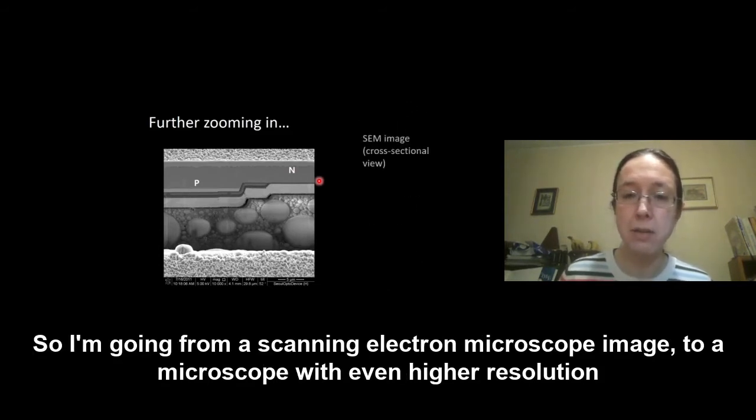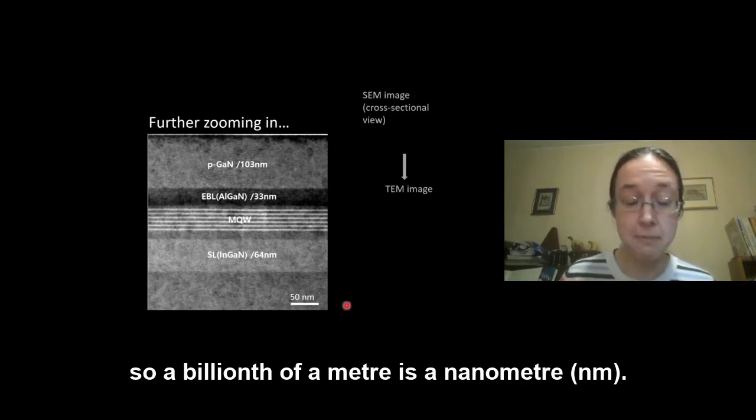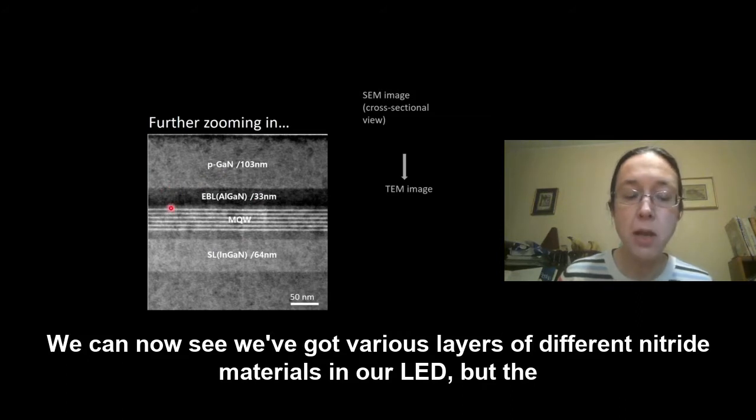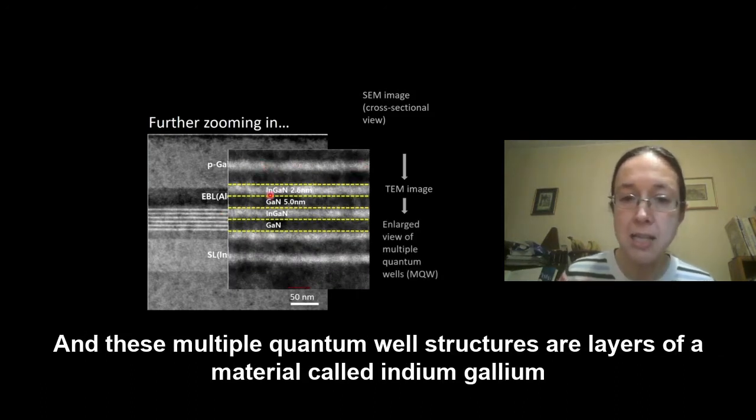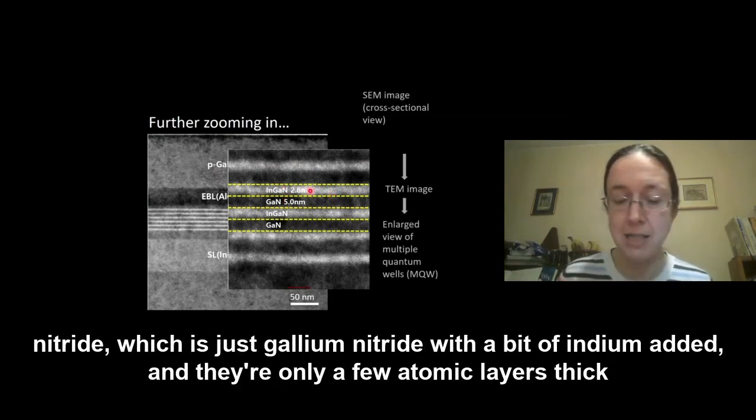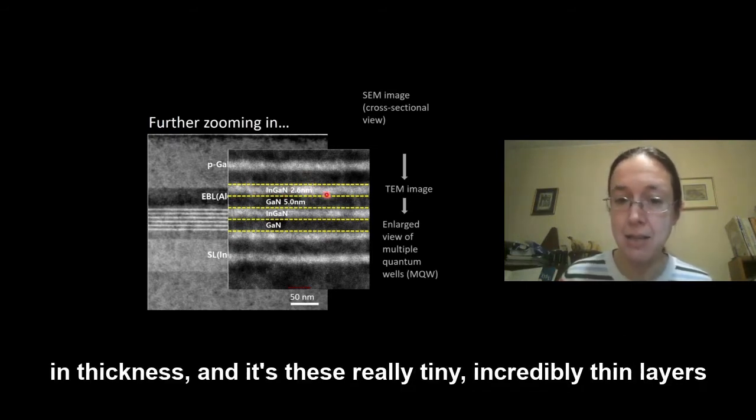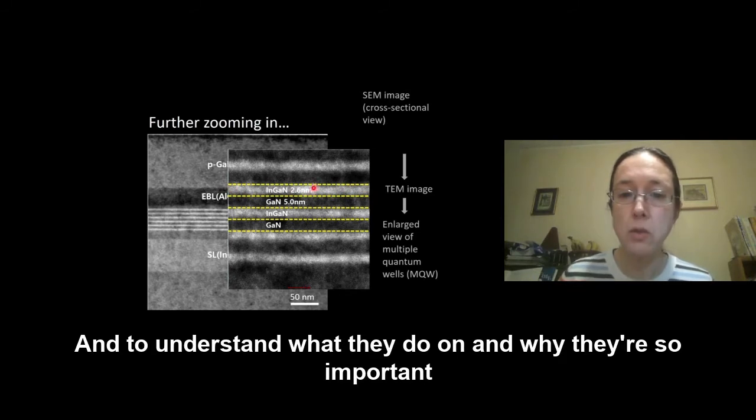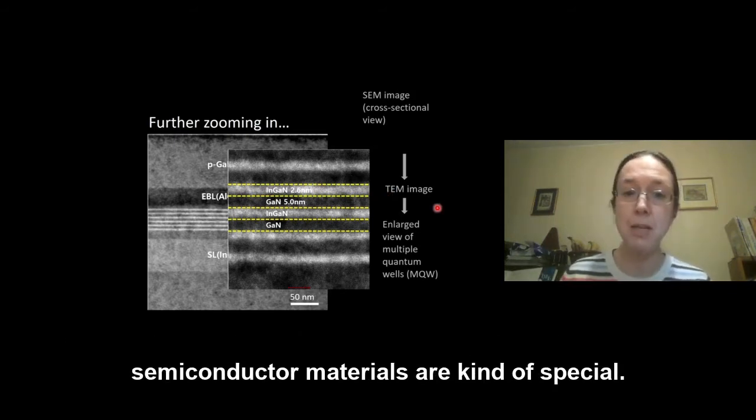So I'm going from a scanning electron microscope image to a microscope with even higher resolution. And here I'm in a transmission electron microscope image. And you'll see my scale bar is now in nanometers. So a billionth of a meter is a nanometer. And we can now see we've got various layers of different nitride materials in our LED. But the most important bit is this that I've labeled MQW, which stands for multiple quantum well. And these multiple quantum well structures are layers of a material called indium gallium nitride, which is just gallium nitride with a bit of indium added. And they're only a few atomic layers thick, maybe typically about 10 layers of atoms thick, which means about 2.6 nanometers in thickness. And it's these really tiny, incredibly thin layers of indium gallium nitride that actually give out the light. And to understand what they do and why they're so important, we're going to have to talk a bit about how semiconductor materials work and about how electricity moves through different materials and why semiconductor materials are kind of special.